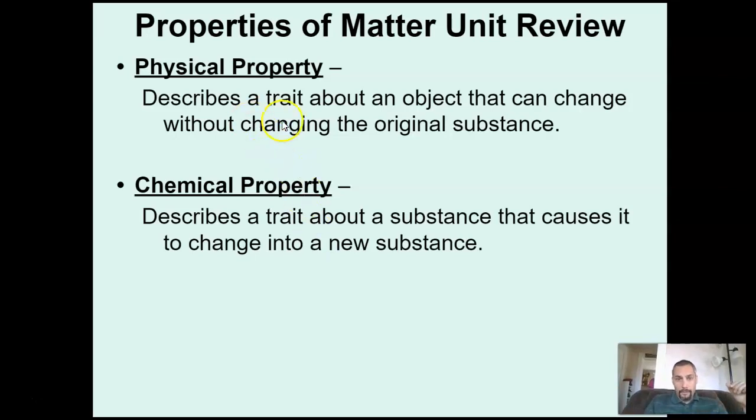So for example, our physical property, we might talk about the color of a metal or something like that, the color of a substance. Chemical property might be the fact that a metal reacts with acid and when it reacts with the acid, it's changing into a new substance.